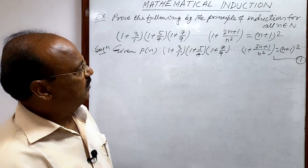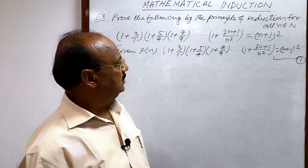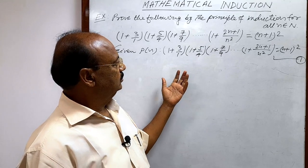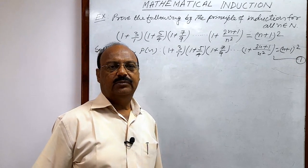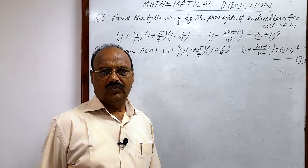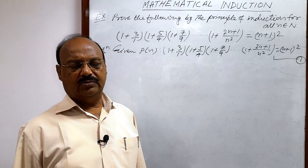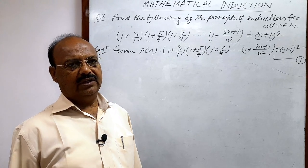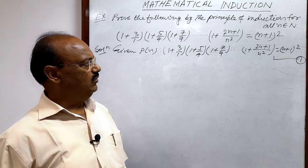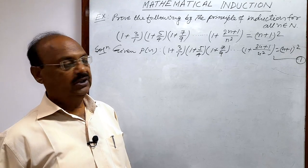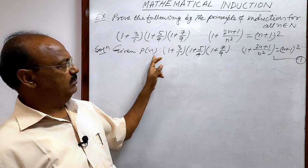We will prove this by the principle of mathematical induction using three steps only. In previous videos we have done many questions on the same topic, so you might already be aware that only three steps are required. The first step is to show that P(1) is true — that is, when we put n equal to 1, we get P(1), and we have to establish that P(1) is true.